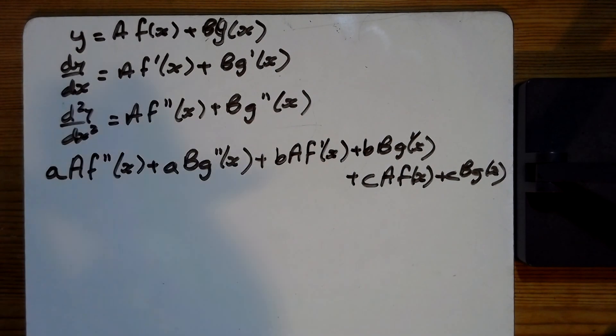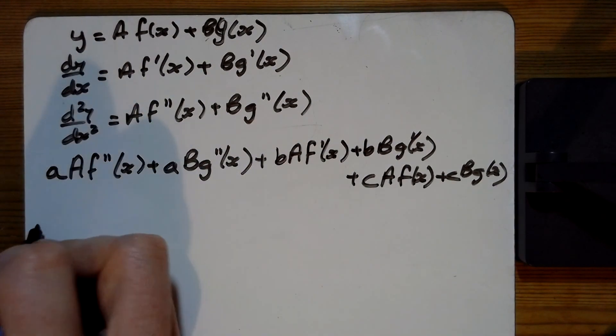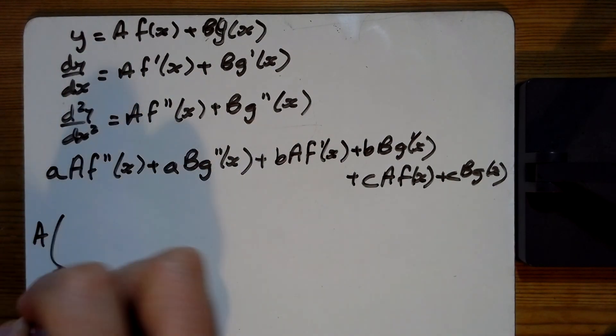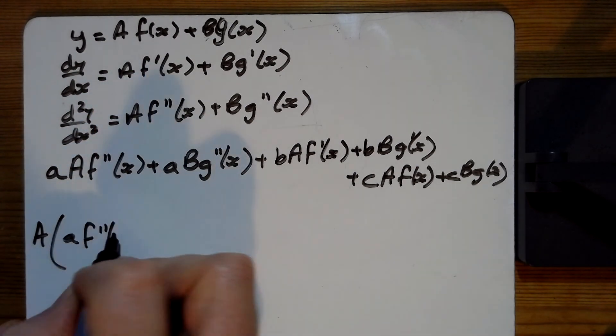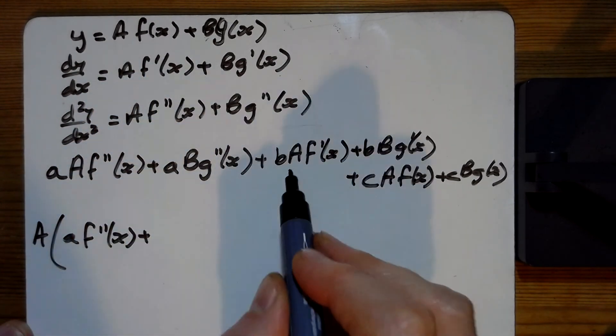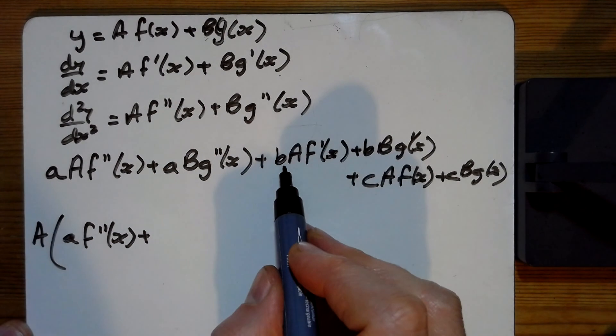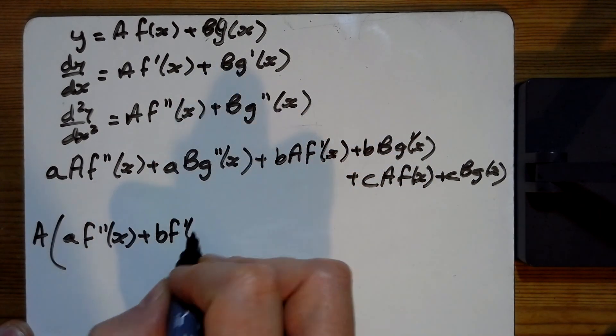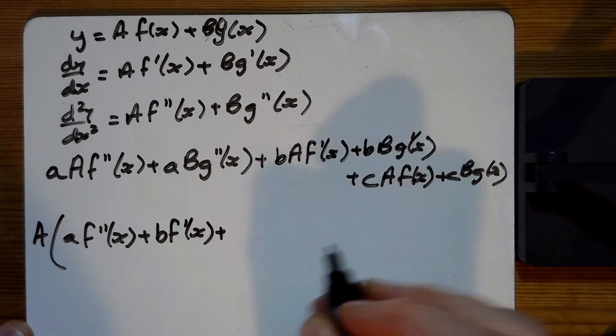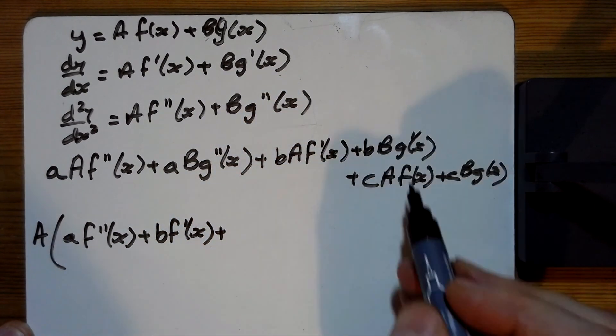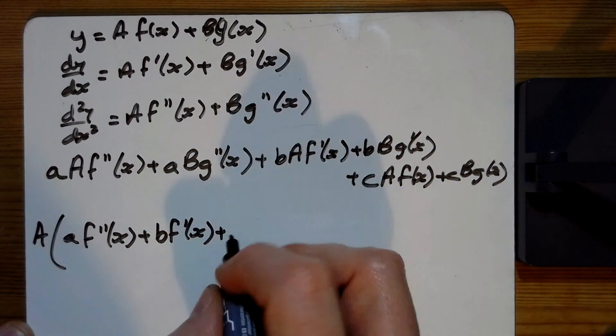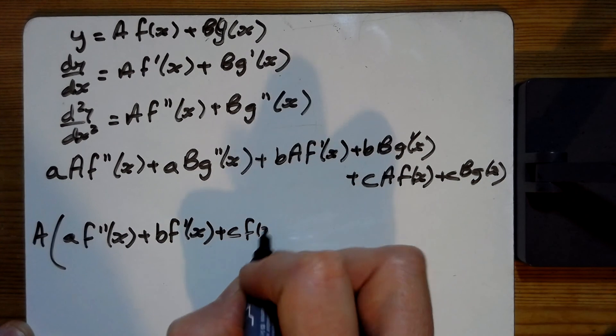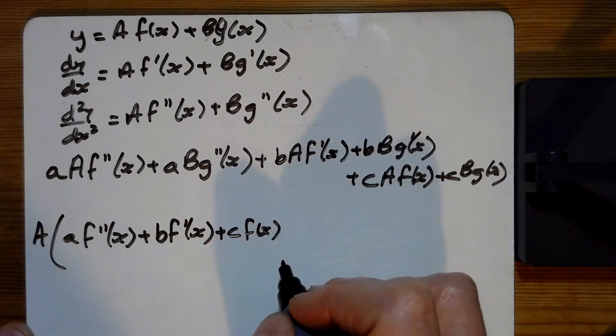Now it's a bit long, but what we're going to do now is take out the factor of big A out of all of this and we'll see what we've got. So big A, we've got a f double dashed of x, plus another big A coming out there, b f dashed of x, plus the big A there, c f of x. So there's the bit with the big A's in.